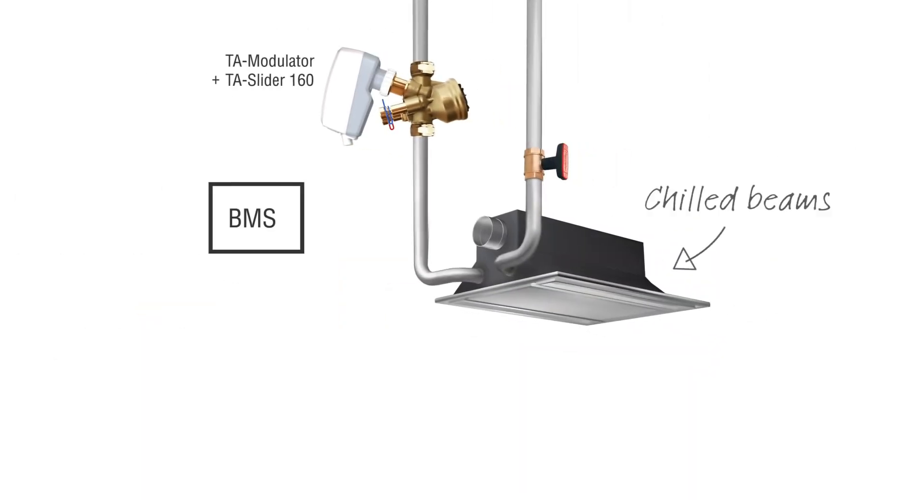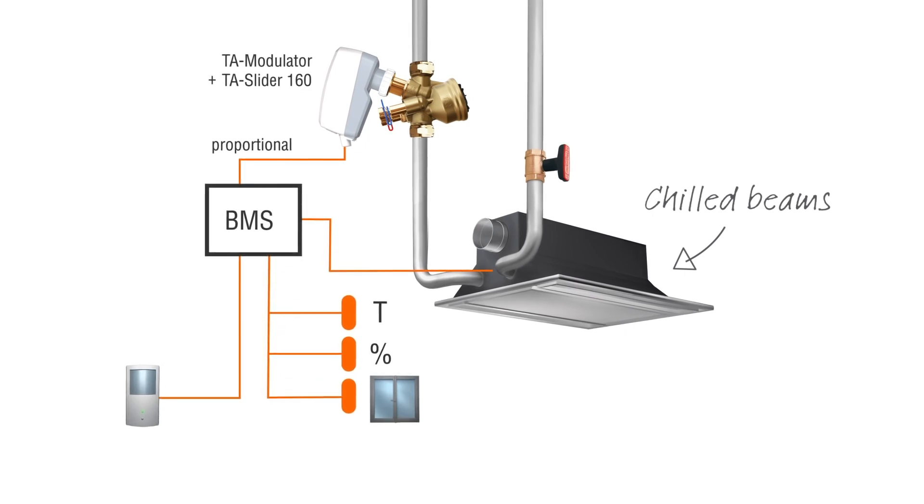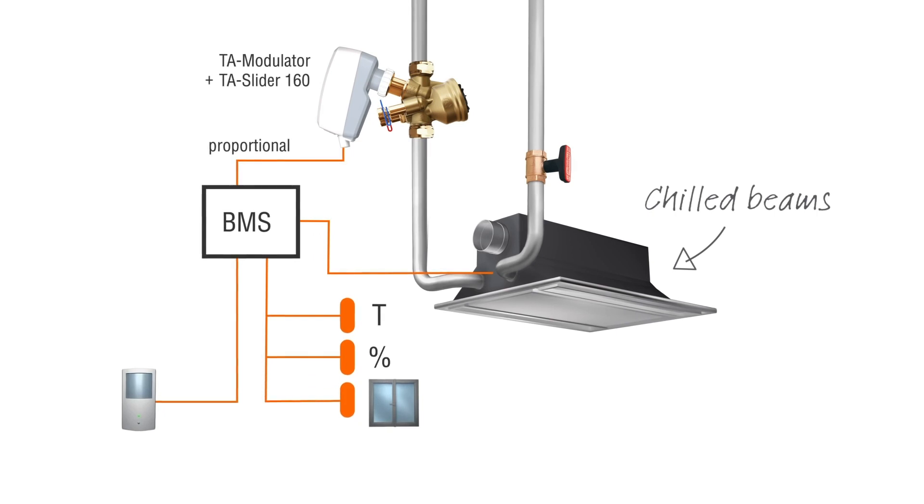While on-off control can deliver air that is too low in temperature from chilled beams and create discomfort, TA modulator guarantees accurate temperature for optimal comfort and tenant satisfaction.